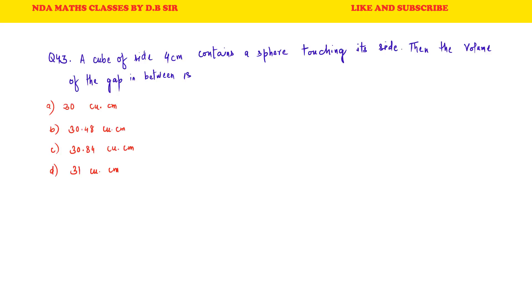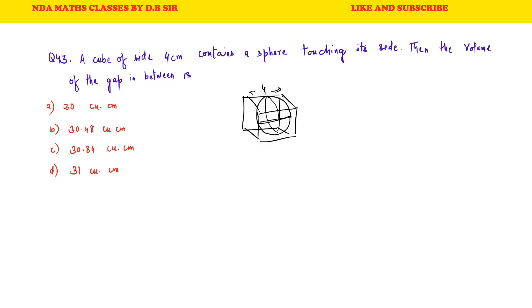Question 43: A cube of side 4 cm contains a sphere touching its sides. Find the volume of the gap in between. The cube has side 4 cm and inside it there is a sphere fitting snugly touching the sides. We need the volume of the gap between the cube and the sphere. The sphere's diameter equals the cube's side, so radius = 2 cm. Volume of cube = 4³ = 64. Volume of sphere = 4/3 × 22/7 × r³ = 4/3 × 22/7 × 8.